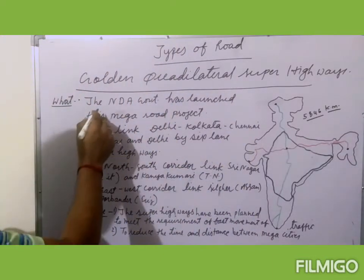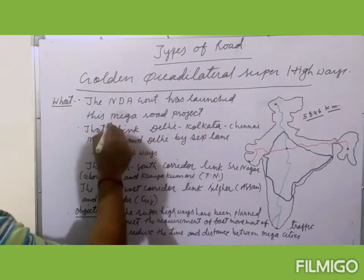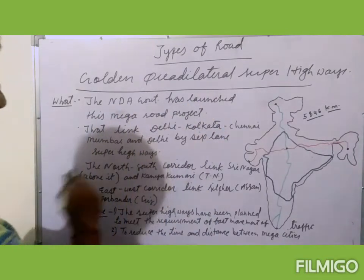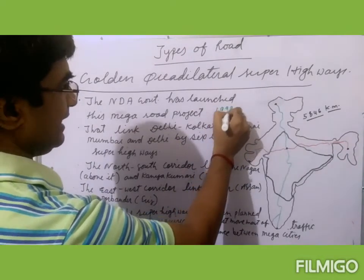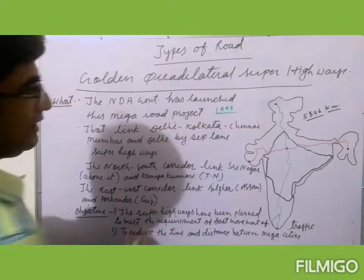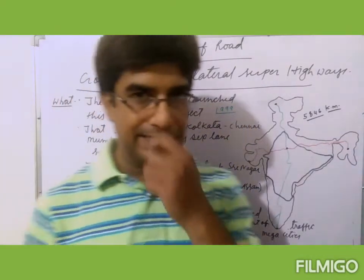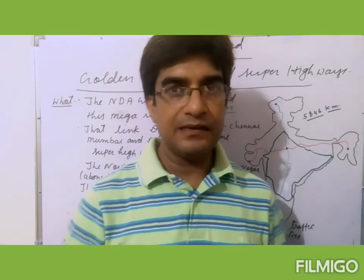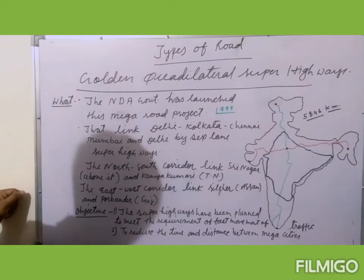The NDA government launched this mega road project in the year 1999, when the BJP with the NDA government came to power for the first time at the centre. So this was the first mega program of the NDA government.